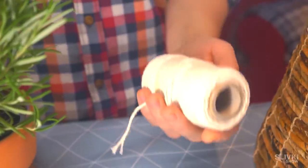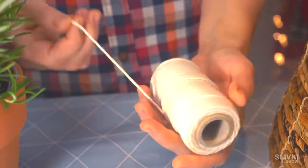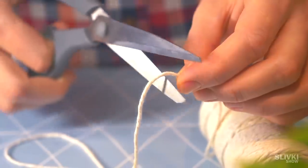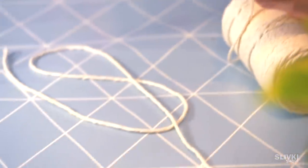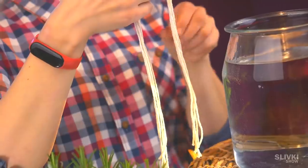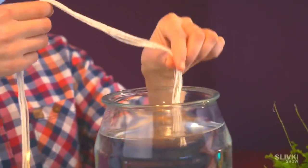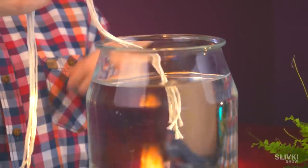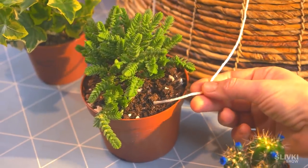Ideally, the container should be on a lower level. Then we take a thick cord and cut enough pieces - as many as we have pots. We dip one end of the cord in the water and put the opposite end in the soil.